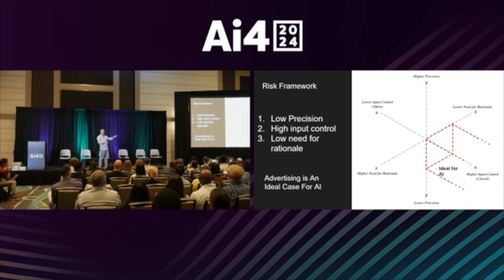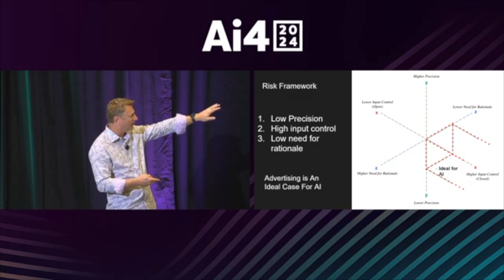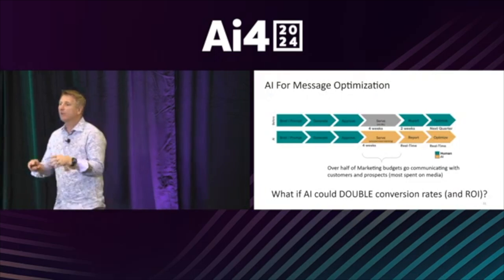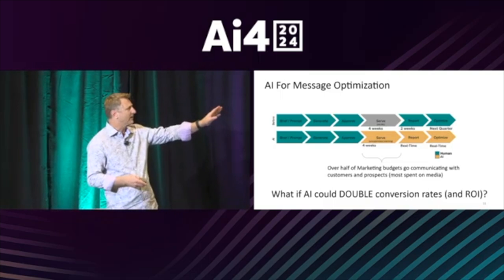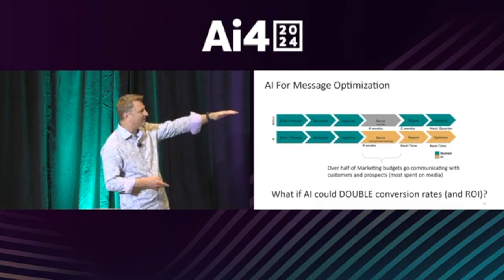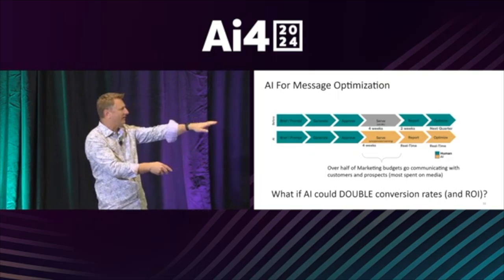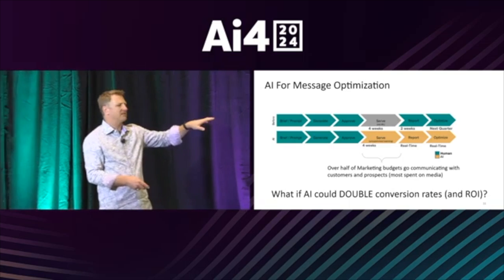The good news for us in marketing is we're actually in the ideal use case as long as we have a human in the loop. When we go outside of that, it's like putting that stop sign out there for anyone to add stickers to — it can be hacked. If you use AI for internal documents, that's sort of perfect because a human is in the loop, you know who's using it and how. In advertising, we have a lot of input control. We can look at our workflow — how we serve advertising, report on it, and optimize it internally — and use AI to help optimize that. Over half of the budget is spent communicating with consumers, mostly in paid media, so if we could double the conversion rate, that has a huge ROI impact.